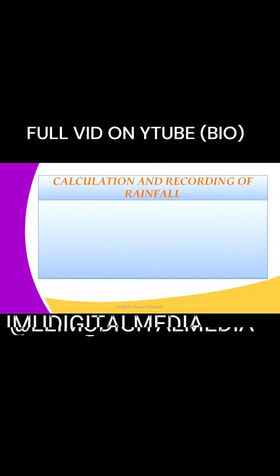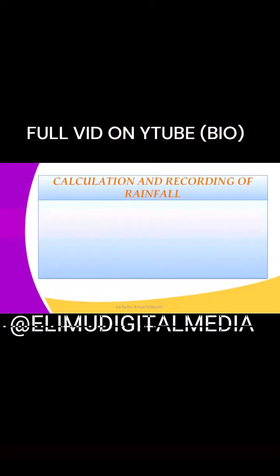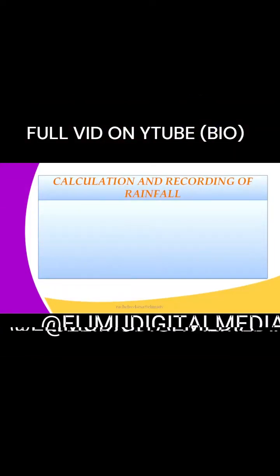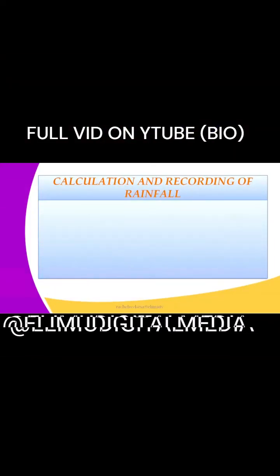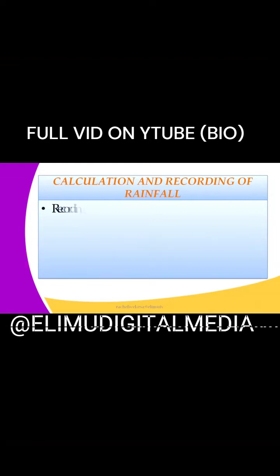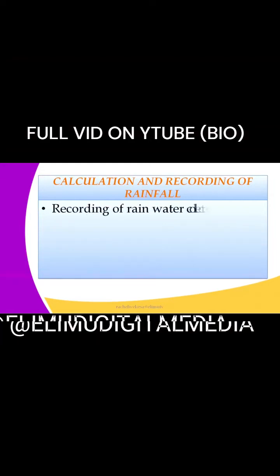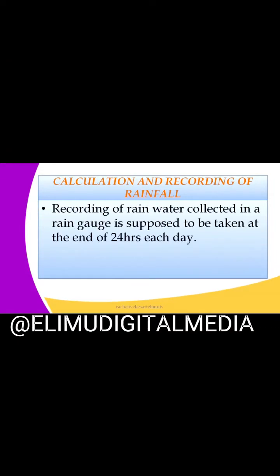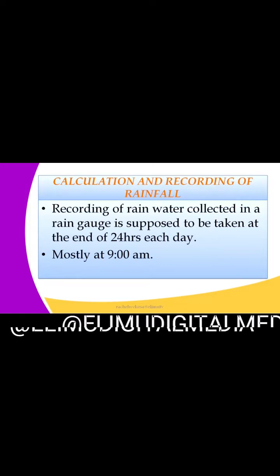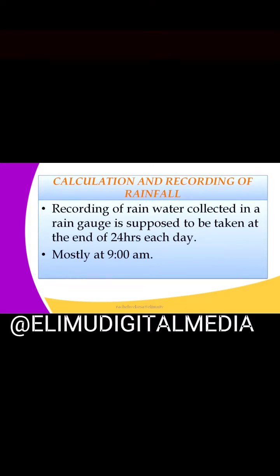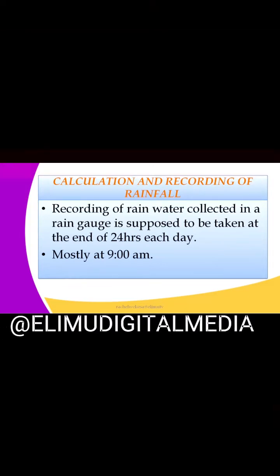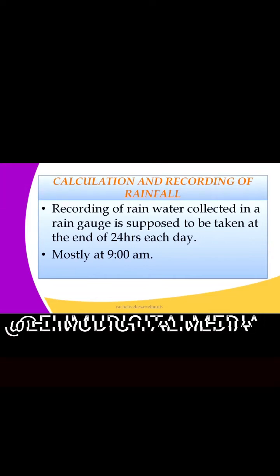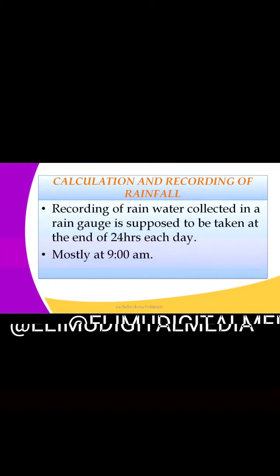For today, we are looking at the calculation and recording of rainfall. When we were looking at the elements of weather, we said that rainfall is the amount of water — water that we receive on the earth's surface in the form of moisture.